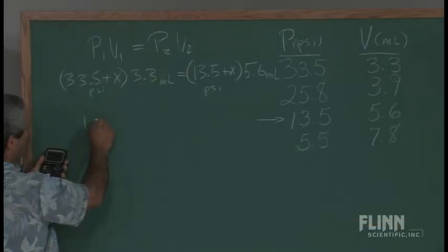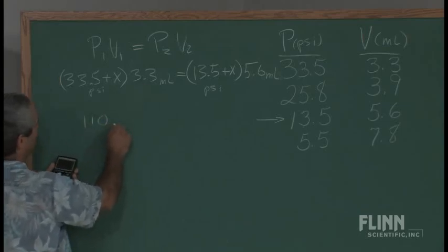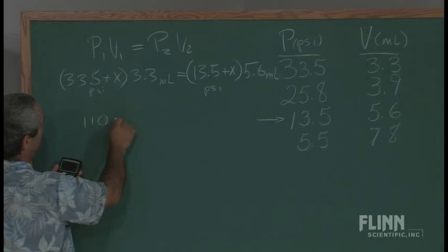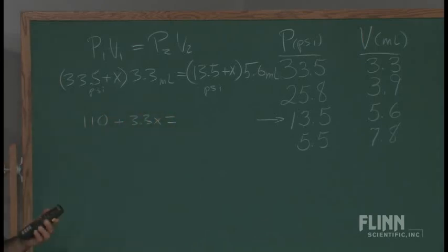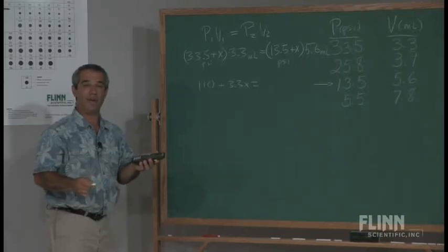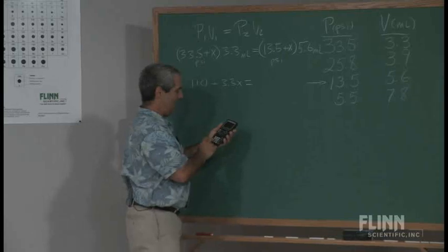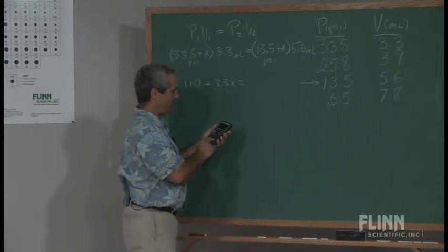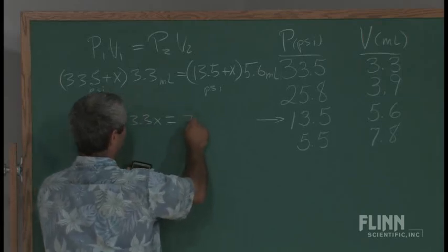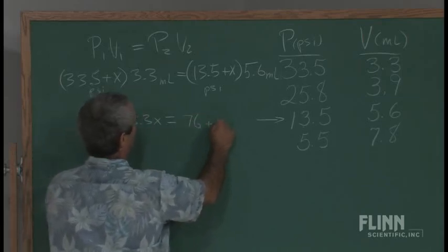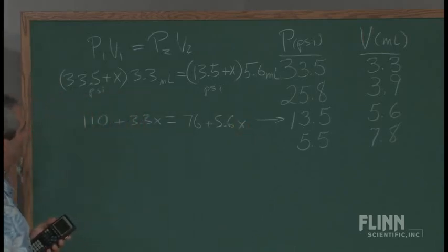We can see that the psi milliliter units will cancel out on both sides, and x will be in psi when we solve for it. Here we go, we have to distribute this. 33.5 times 3.3, we have 110.55 - really just with two sig figs in there I'm going to call it 110 plus 3.3x. I always like it when the labs we do can emphasize the math they're learning about, distributing, and then we're going to be combining like terms in a second. 13.5 times 5.6 is 75.6, I guess we should just call that 76 plus 5.6x.